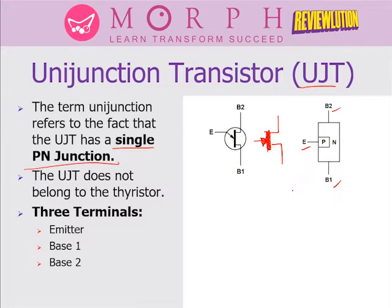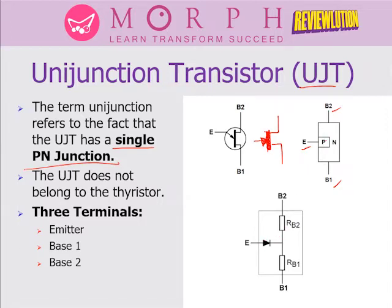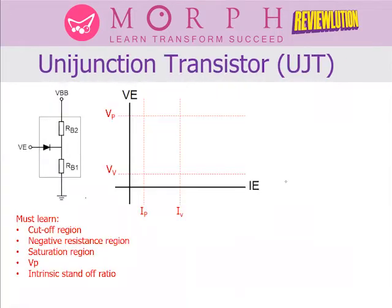The electrical representation using components of our UJT looks like this. We have a PN junction that can be represented by a diode. Then we have the impedance to base 2 and base 1 represented by RB1 and RB2. That becomes our electrical representation that can really help us analyze how the UJT works. The things we should learn here are: the cutoff region, negative resistance region, saturation region, the peak point, and the intrinsic standoff.